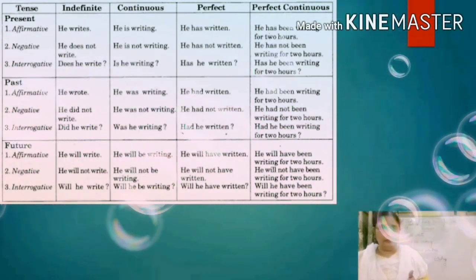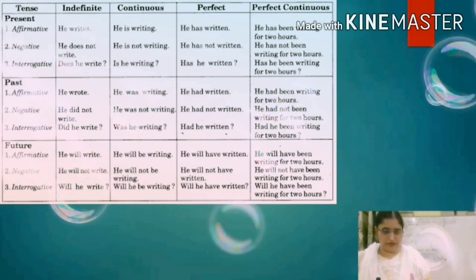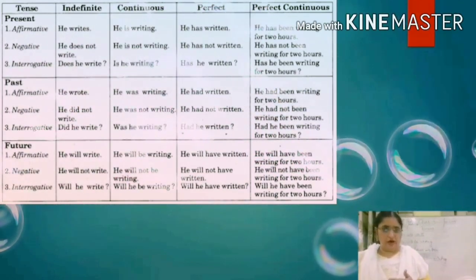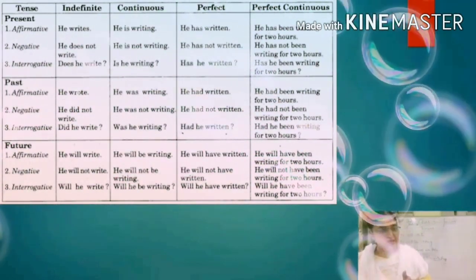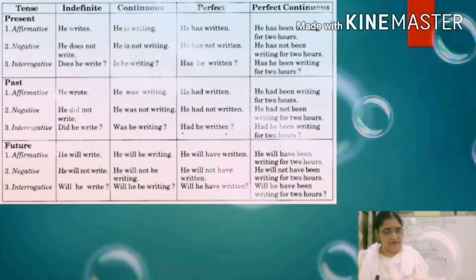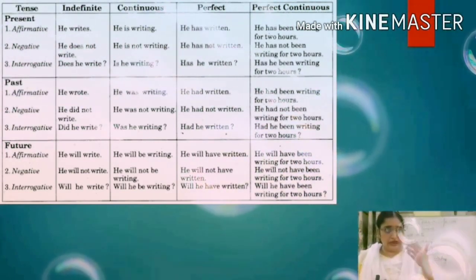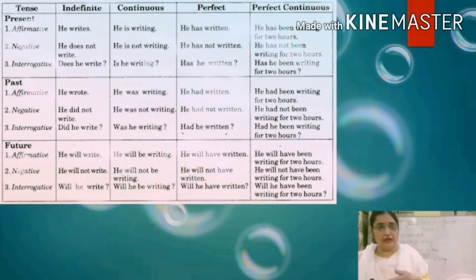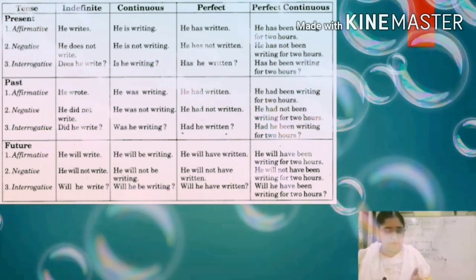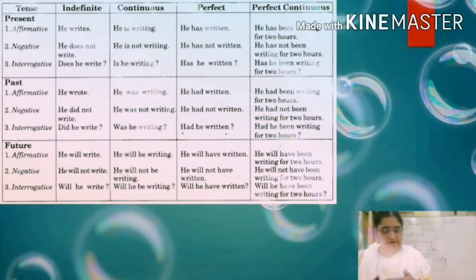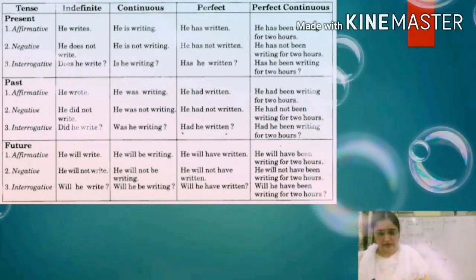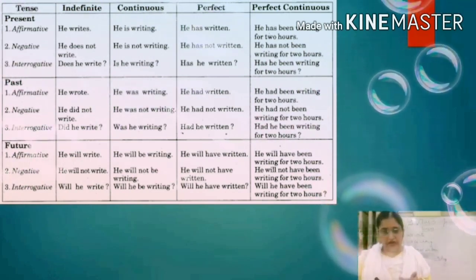In future affirmative, we use 'will' and the first form of the verb — so 'he will write.' For future continuous, where an action will be ongoing, it becomes 'he will be writing.' For future perfect, 'he will have written.' And for future perfect continuous, 'he will have been writing for two hours.'